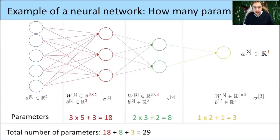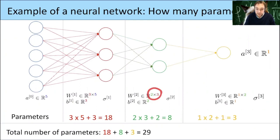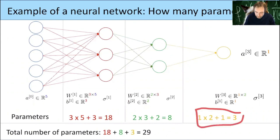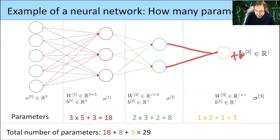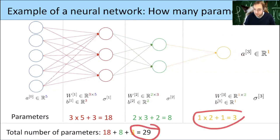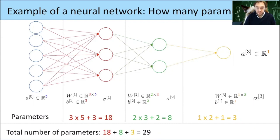We can now count how many numbers we want to find. In the first layer: 15 numbers in the matrix plus 3 biases = 18. In the second layer: 6 numbers in the matrix plus 2 biases = 8. In the last layer: 2 numbers in the matrix plus 1 bias = 3. In total, to train this neural network, we want to find 29 numbers.